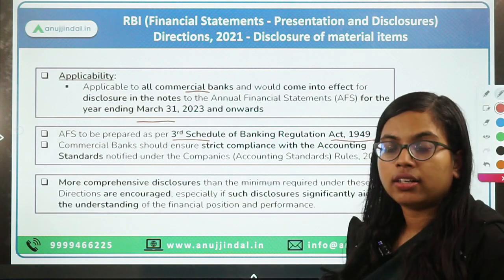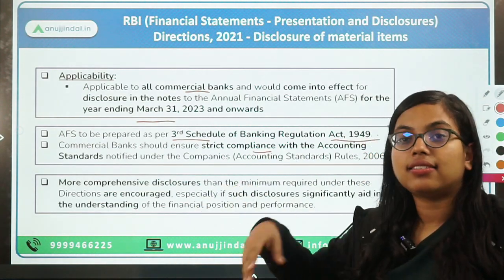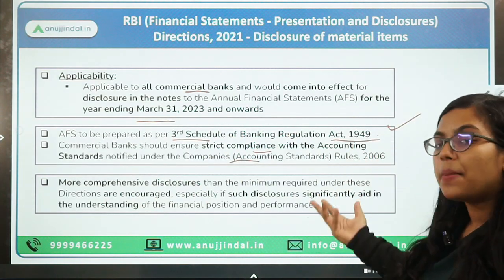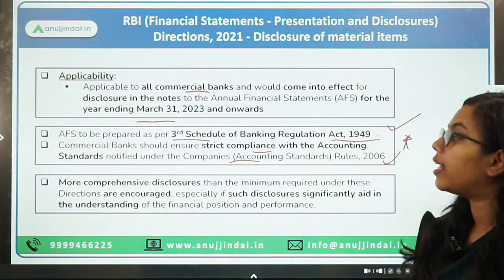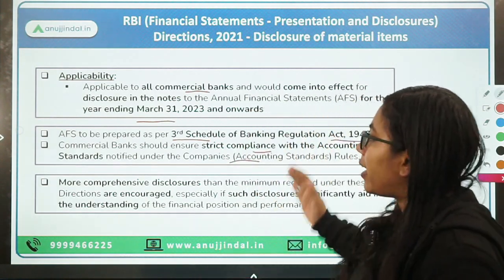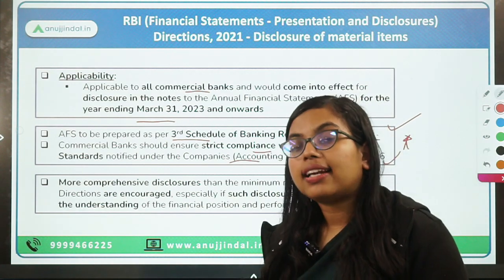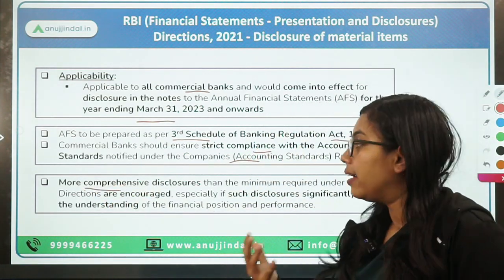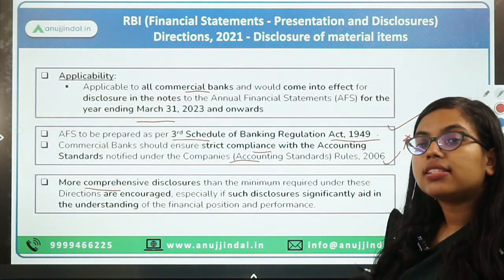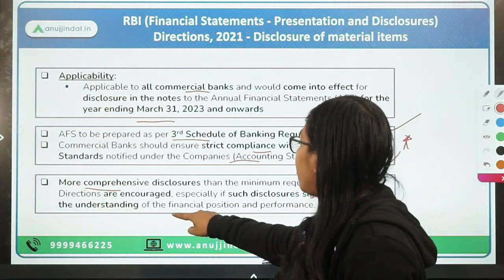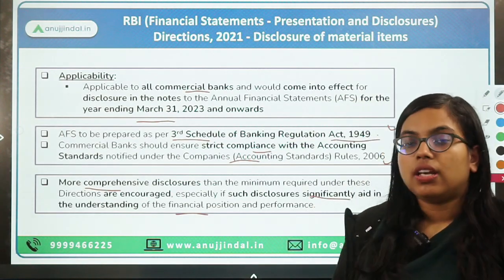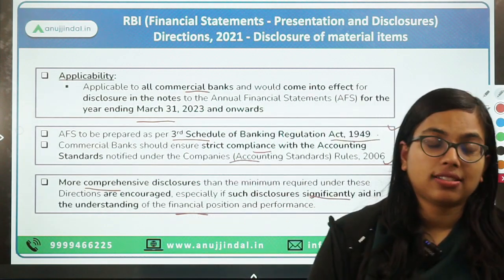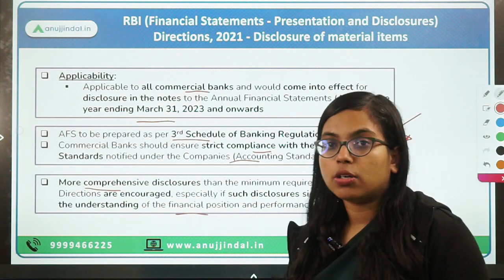RBI has also instructed commercial banks to ensure strict compliance with the accounting standards notified under the Companies Accounting Standard Rules 2006, which has been amended from time to time. Apart from that, there is also a statement in this direction which says that RBI encourages commercial banks to have more comprehensive disclosures than the minimum required, especially if such disclosures are significantly helping in understanding the financial performance and financial position. Any disclosure that helps stakeholders better understand the annual financial statement should be provided by commercial banks.